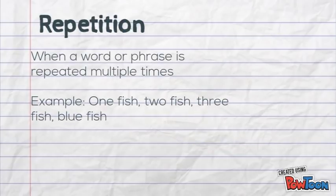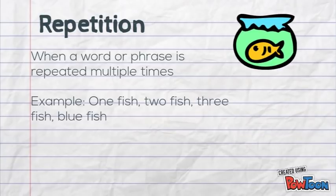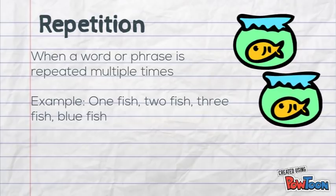Repetition is when a word or phrase is repeated multiple times. So for example, like from Dr. Seuss's book, one fish, two fish, three fish, blue fish. And we could just keep going with more fish. But repetition draws your attention to important parts.